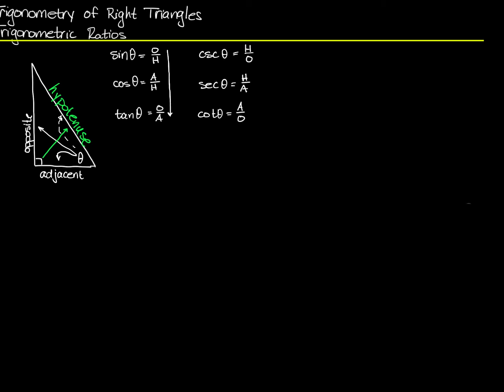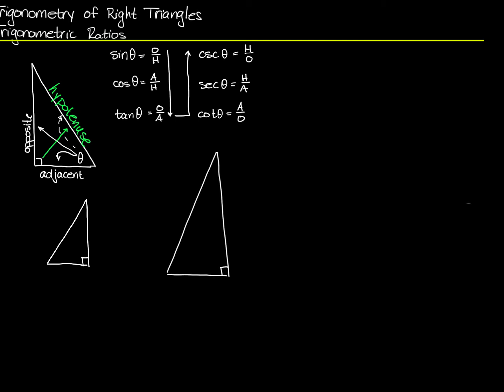Here are my six trigonometric ratios — I went down and then across and up from the bottom for the other three. Now let's take a look at a triangle. I'm going to call this one a 3-4-5 triangle, and this one is 30, 40, and 50. Each of the sides of this triangle is just 10 times the size of the other — it's like I took this triangle and zoomed in, keeping all the angles the same size until it was bigger.